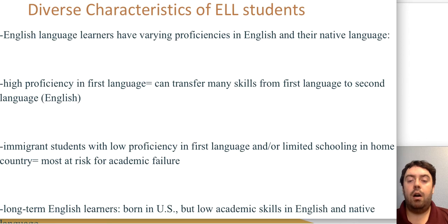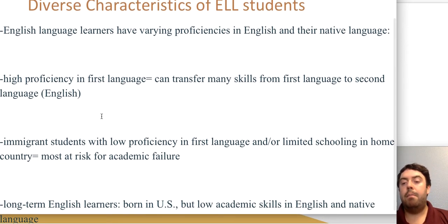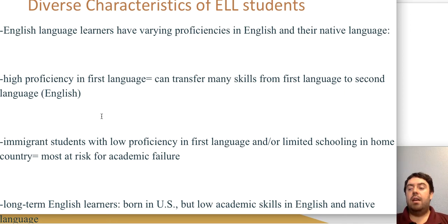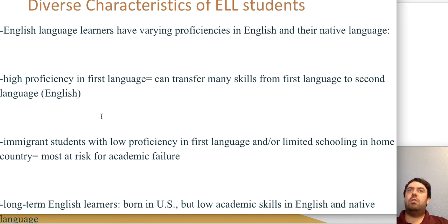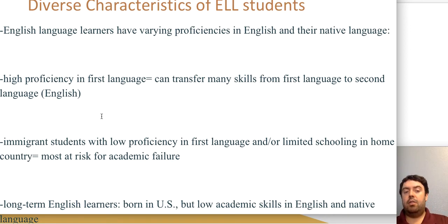Unfortunately, there are groups of English language learners most at risk of academic struggle. These are ELLs who never fully developed their native language and are still struggling to develop English — they're having difficulty with both languages and are not academically proficient in either. Even if you provided those students with native language materials and assessed them in their native language, they still might struggle.